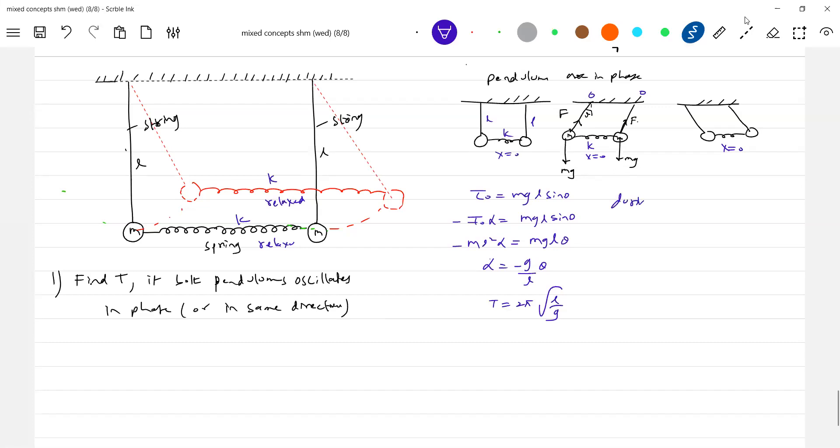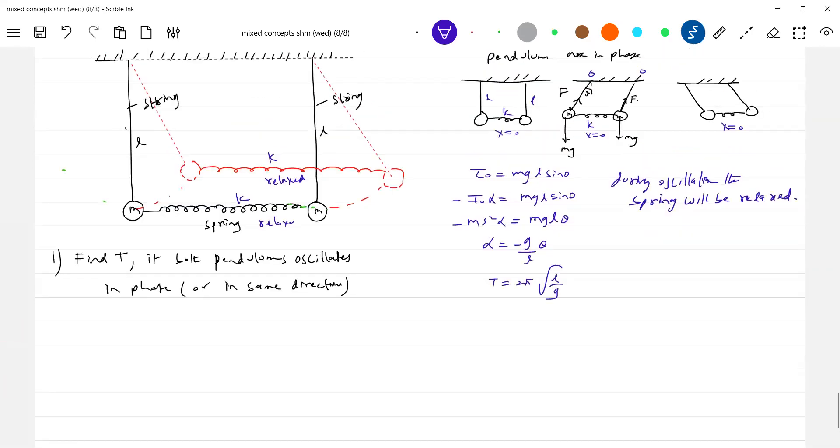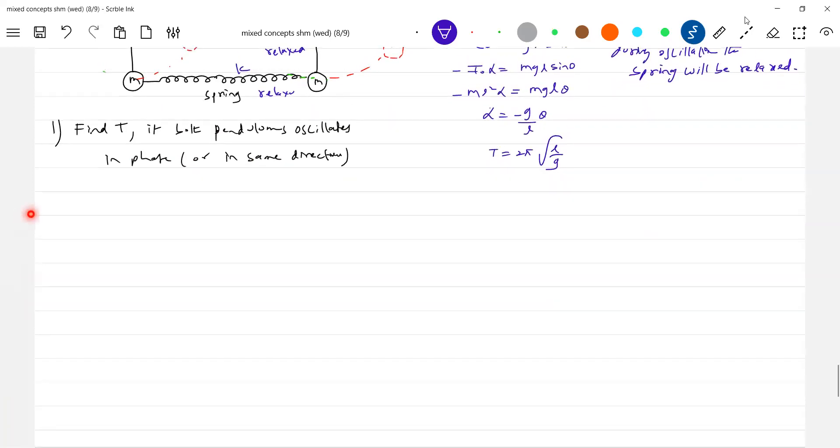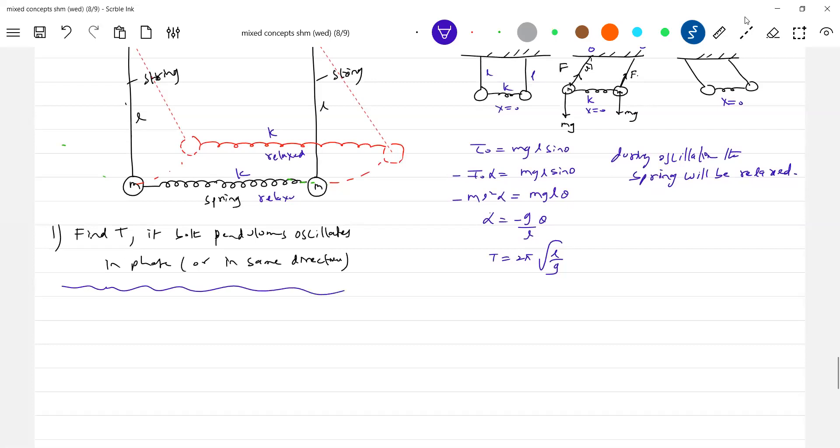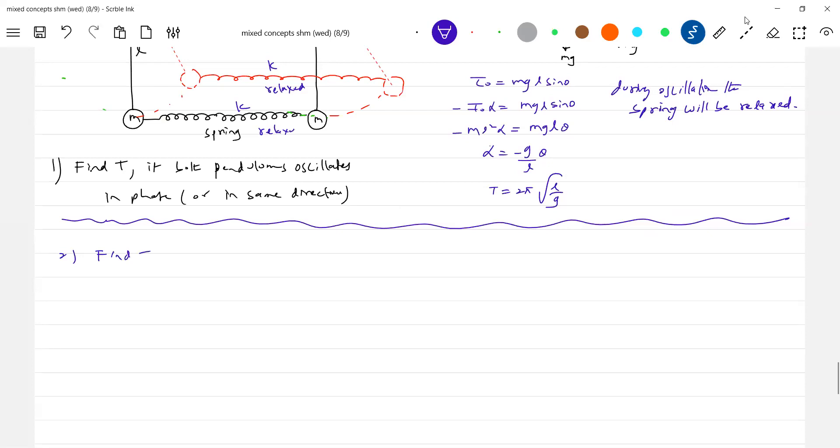The spring will be relaxed. Next, find the time period of oscillations if both the pendulums oscillate out of phase, or antiphase, or in opposite direction. I'll take the next part of the problem.